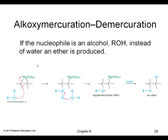Instead of water, the reaction can also be done with an alcohol. When the alcohol adds on, we end up with an ether as the final product. So be aware of what you're adding in the mercuric acetate first step — it can either be water to give an alcohol, or an alcohol to end up with an ether.